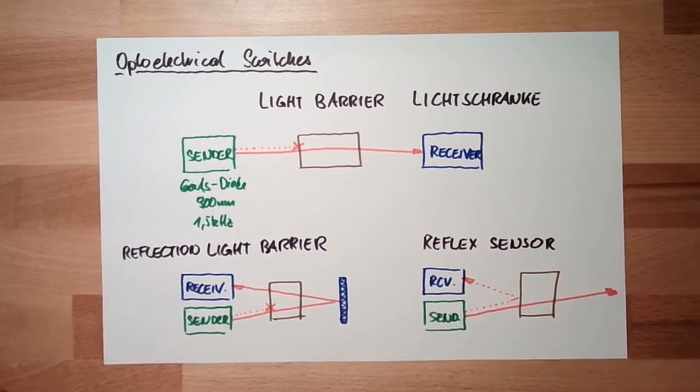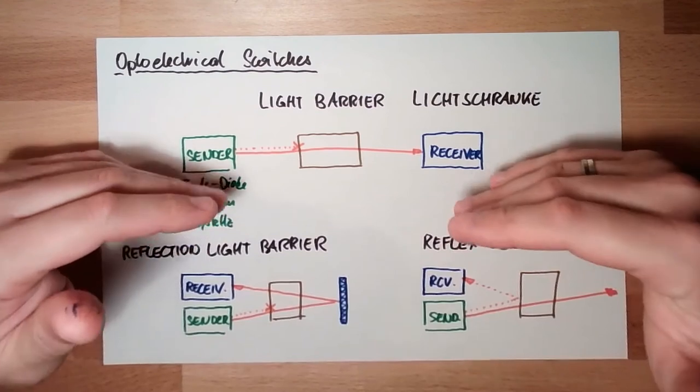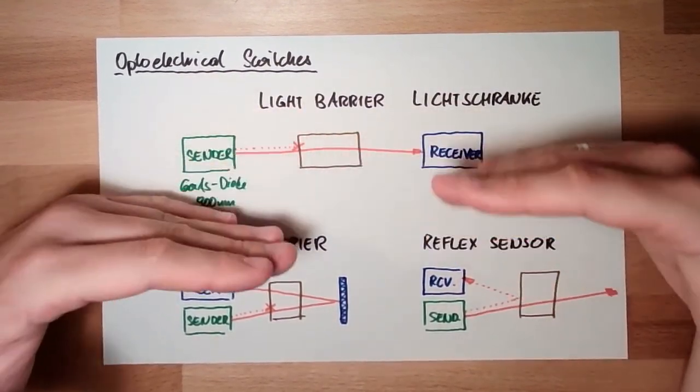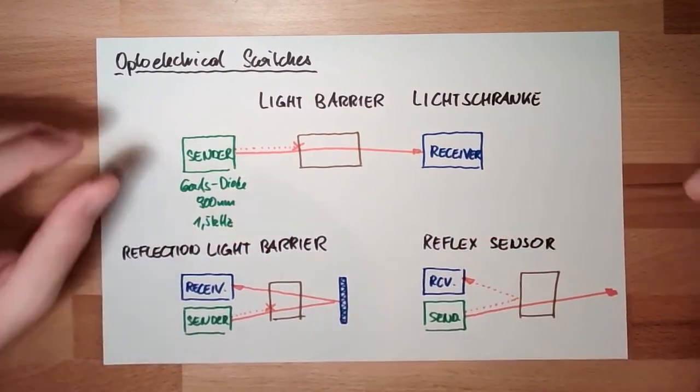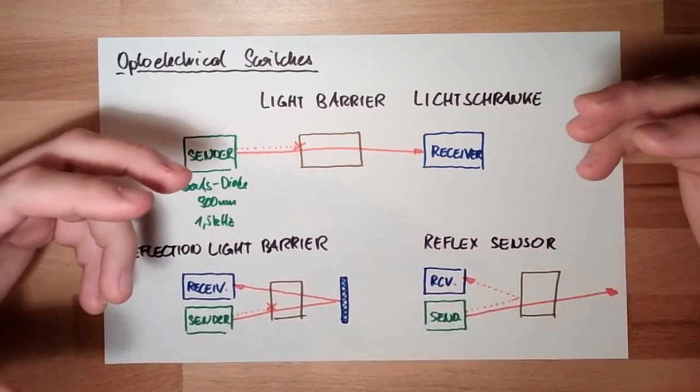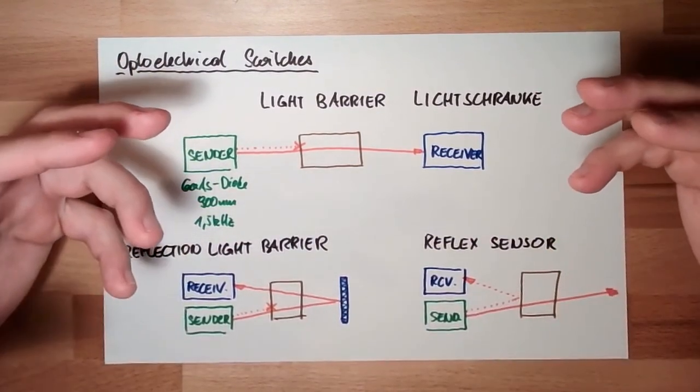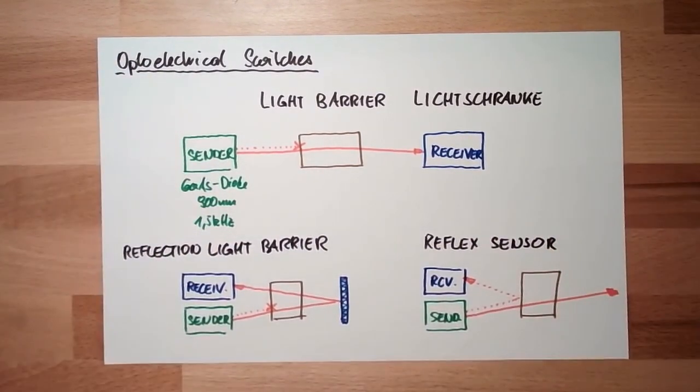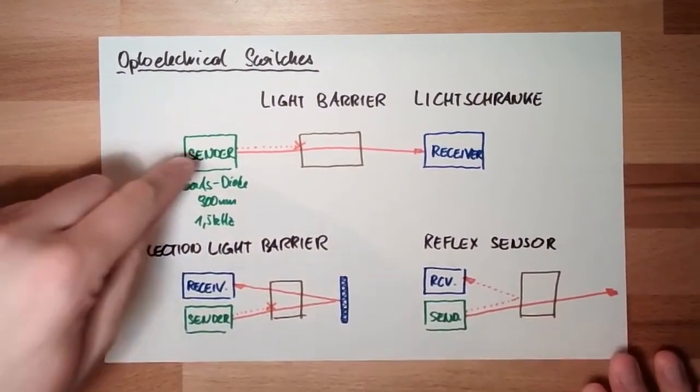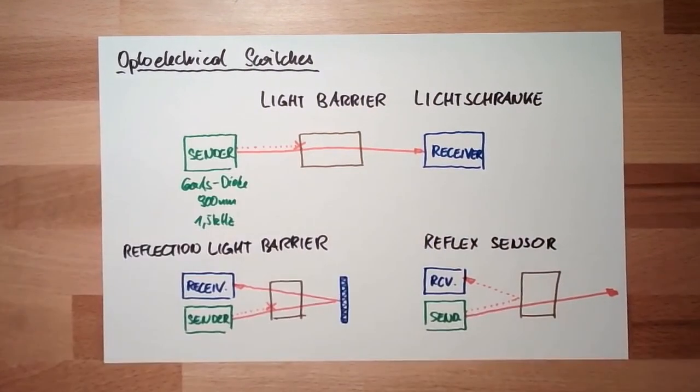Then this reflection might not come. It might be an issue. So the wrong light is an issue. Alignment is an issue, of course. Then dirt, dust, nebula, moisture, mist or something like this. Everything which can block light might be an issue.